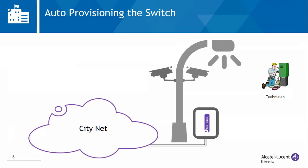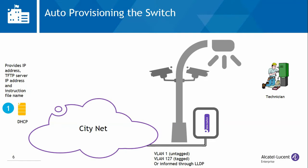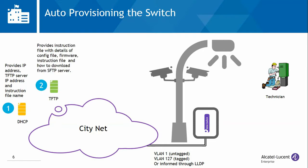Let's see how the auto remote configuration download feature works. When the blank switch boots up, it will try to get an IP address through DHCP. It will attempt to use the untagged native VLAN or tagged VLAN 127. It can also try this on a different VLAN, which the upstream switch can inform through LLDP. The DHCP server provides the IP address of a TFTP server and the name of an instruction file through DHCP options. The switch will then contact the TFTP server and download the instruction file. The instruction file contains details of firmware and configuration files and how to download them from an SFTP server.